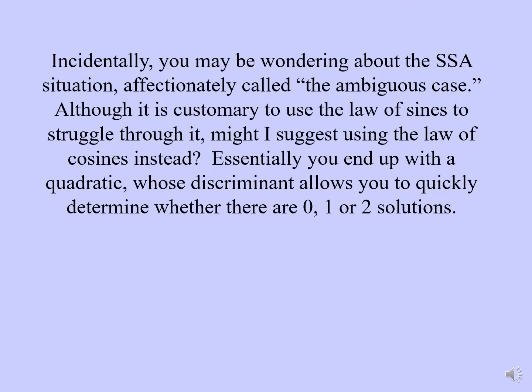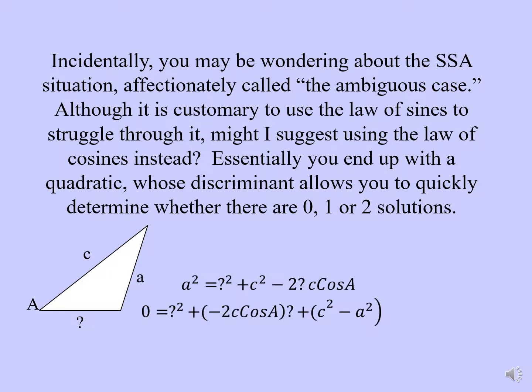Incidentally, you may be wondering about the SSA situation, affectionately called the ambiguous case. Although it is customary to use the Law of Sines to struggle through it, might I suggest using the Law of Cosines instead? Essentially, you end up with a quadratic whose discriminant allows you to quickly determine whether there are 0, 1, or 2 solutions.